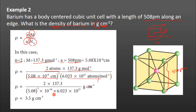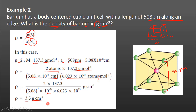Multiplying out, 10 to the power of minus 8 cubed gives 10 to the power of minus 24. Completing the multiplication gives us a density of 3.4 grams per centimeter cube.